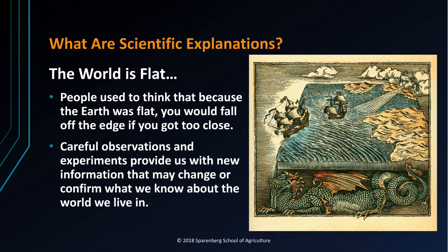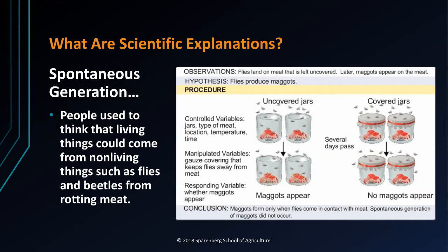People used to think that because the earth was flat, you would fall off the edge if you got too close. Careful observations and experiments provide us with new information that may change or confirm what we know about the world we live in. People used to think that living things could come from non-living things, such as flies and beetles from rotting meat. They believed mice and rats came from household garbage or stored grain. They called it spontaneous generation.